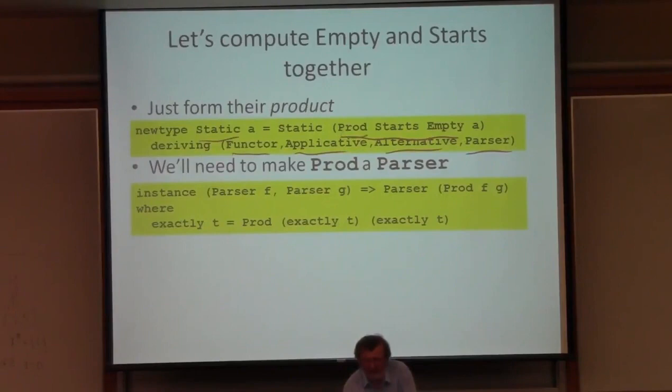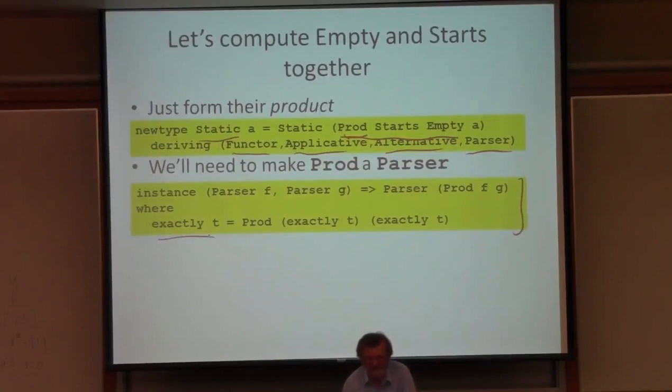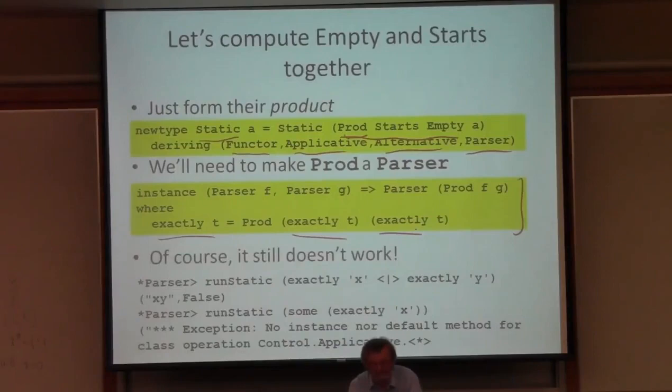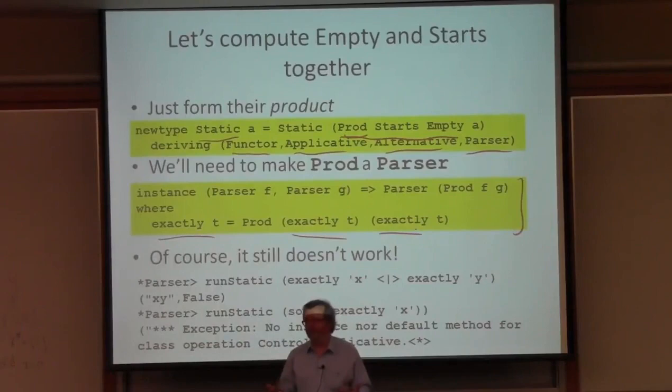I also have to explain how to match exactly T in this functor, because I'm deriving instances for prod. There is no parser instance for prod yet because parser is a class I've written for this application. So I have to define how to match exactly T in this functor — and of course what I do is just use exactly T on each of the two components that I'm combining.